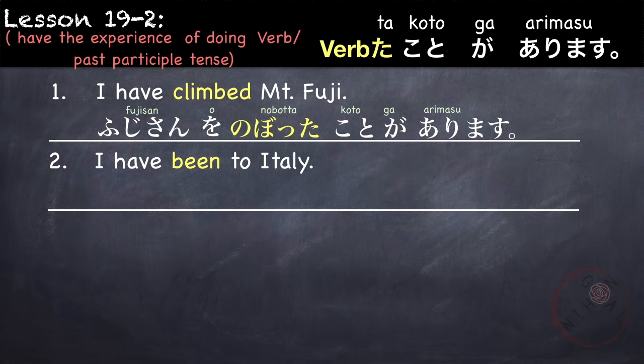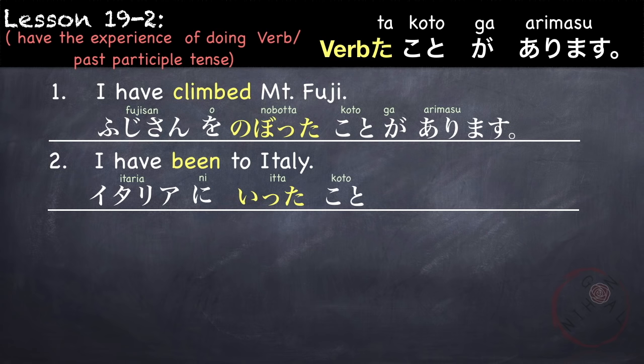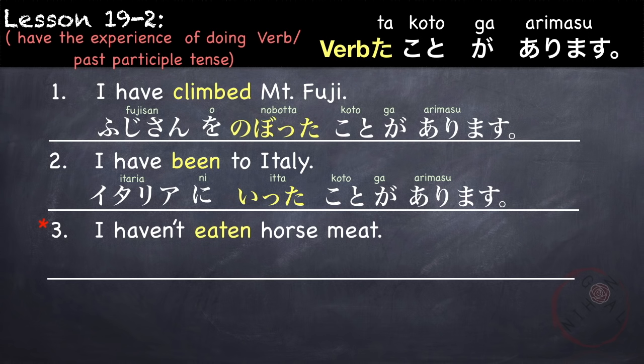But remember, this is a bit different from the plain past tense, which indicates that you did something in the past. For example, I climbed Mount Fuji: Fujisan o noborimashita. So it's different from Fujisan o nobotta koto ga arimasu, which means I have climbed Mount Fuji. Another example: I have been to Italy. Itaria ni — our verb is been, which is itta, from the verb ikimasu. Itaria ni itta koto ga arimasu, meaning I have experienced going to Italy, which means I have been to Italy.